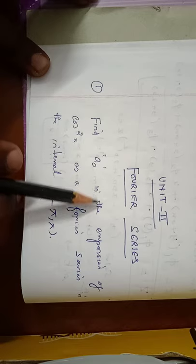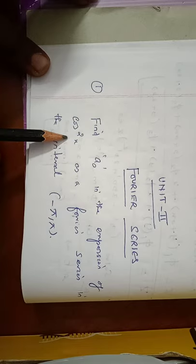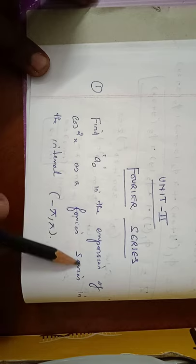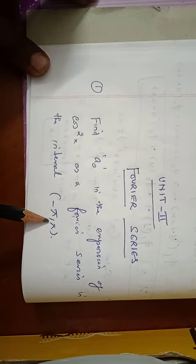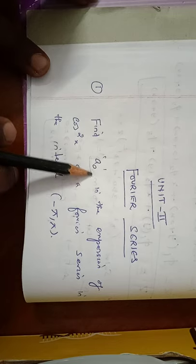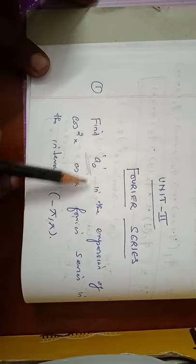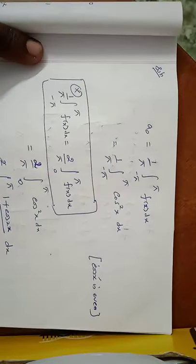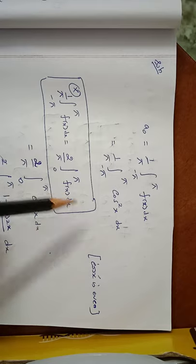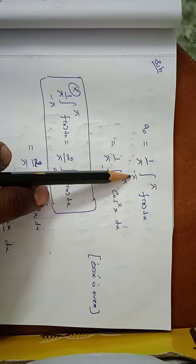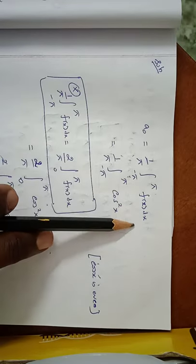First problem: find a₀ in the expansion of cos²x as a Fourier series in the class interval minus π to plus π. We have to find the constant term a₀ for this Fourier series. The a₀ formula is a₀ = (1/π) — this is the full range problem — so a₀ = (1/π) times the integral from minus π to plus π of f(x) dx.